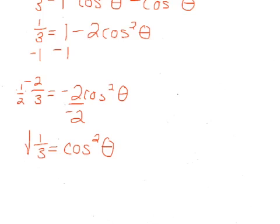And then square root both sides. So our final answer will be plus or minus root 3 over 3 equals cosine theta. And that is our final polar equation.